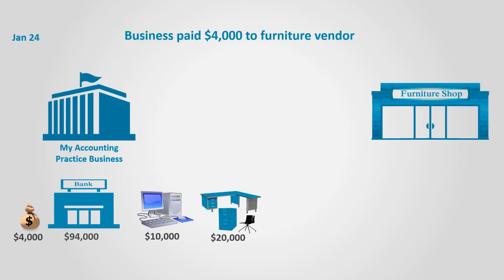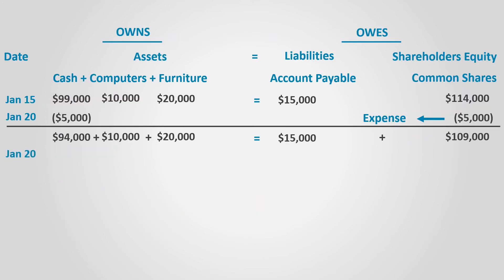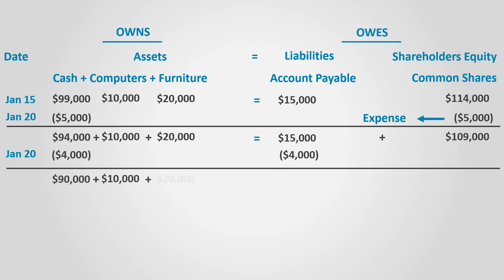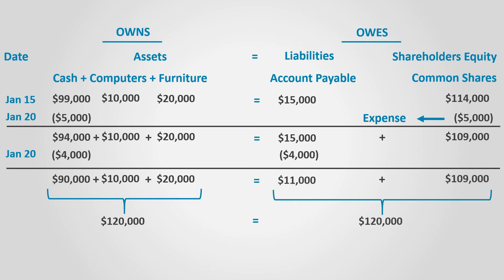On January 24th, the business paid the office furniture vendor $4,000. Total assets decreased in the form of cash by $4,000 to equal $120,000. On the other hand, the cash paid reduces the liability, so accounts payable is reduced by $4,000 to equal $11,000. Notice that there is a decrease on the asset side and another equal decrease on the liability side — shareholders' equity in such a case is not affected.